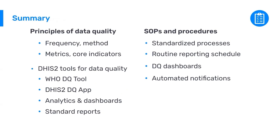Finally, a quick summary. In this presentation we've gone over the principles of data quality, the frequency of data quality checks, different methods of data quality checks, metrics for data quality, and some of the core indicators to monitor. We've reviewed various data quality tools in DHIS-2, including the WHO data quality tool, the DHIS-2 data quality app, how data quality can be visualized on the dashboard and in other analytics, and the standard reports and their data quality functionalities. We've also touched on standard operating procedures and how they are critical for routine data quality processing, as well as examples of routine data quality monitoring dashboards and how important automated notifications from DHIS-2 can be.